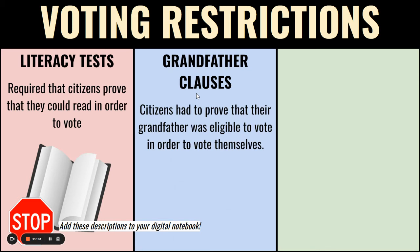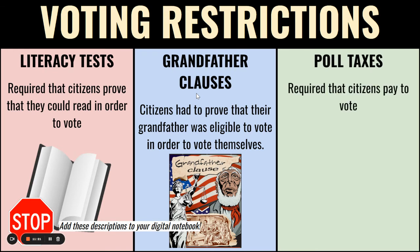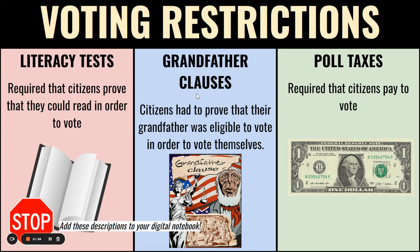The second restriction was the grandfather clause — citizens had to prove that their grandfather was eligible to vote in order to vote themselves. Many former slaves did not have grandfathers who had the ability to vote since the 15th Amendment had just gone into effect, so this was another barrier. The third was the poll tax, which required citizens to pay to vote. Many formerly enslaved people did not have high enough paying jobs to pay these taxes, and many were stuck in the sharecropping system.